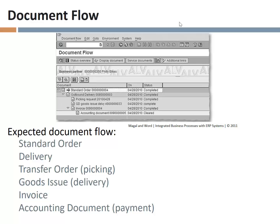This is a really nice feature available as part of the fulfillment process. All you need to do is use a transaction to find any one of these documents, and once you have it pulled up, go to Environment and choose Display Document Flow to get this result.